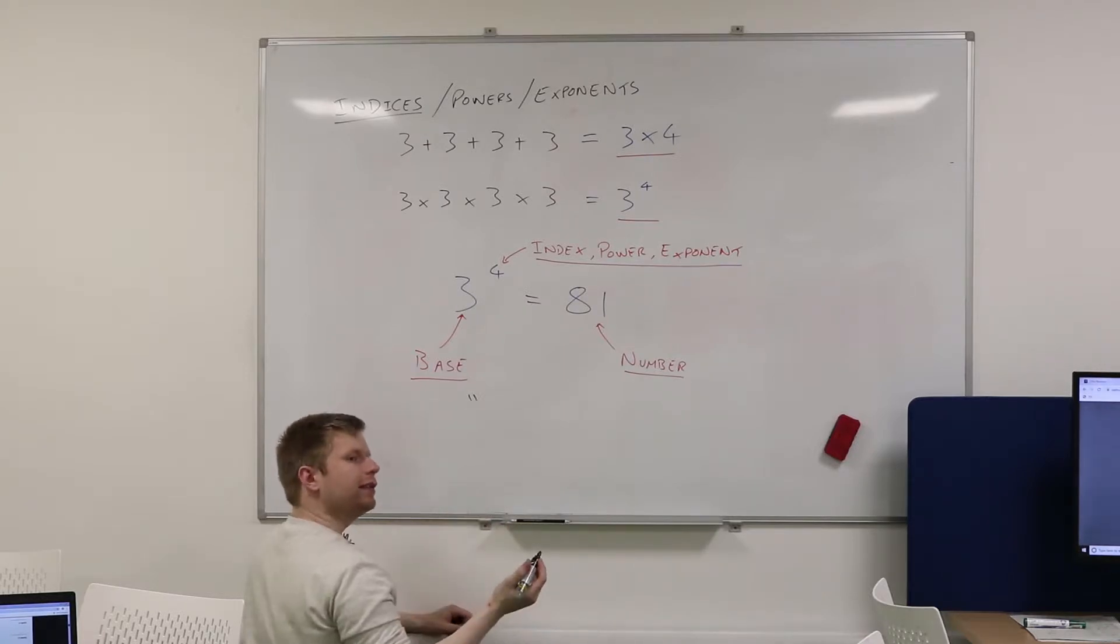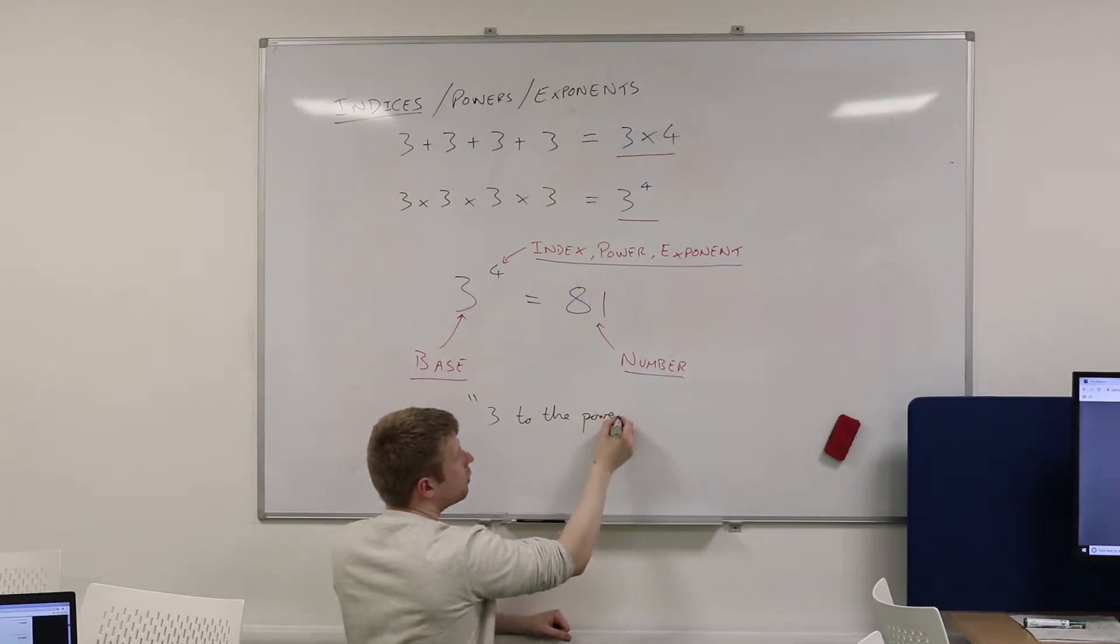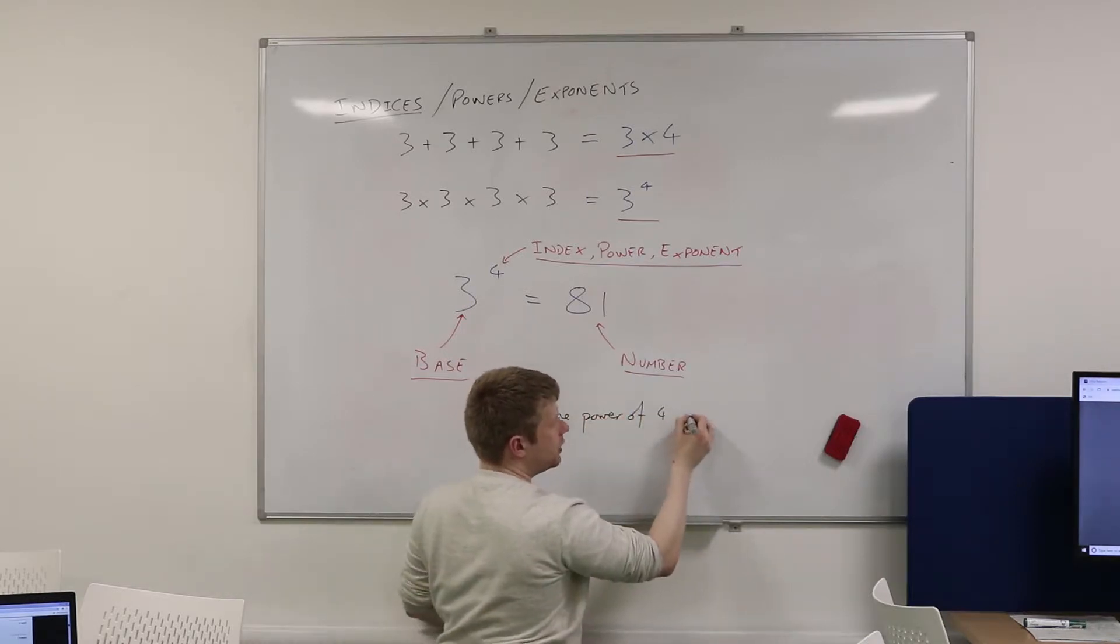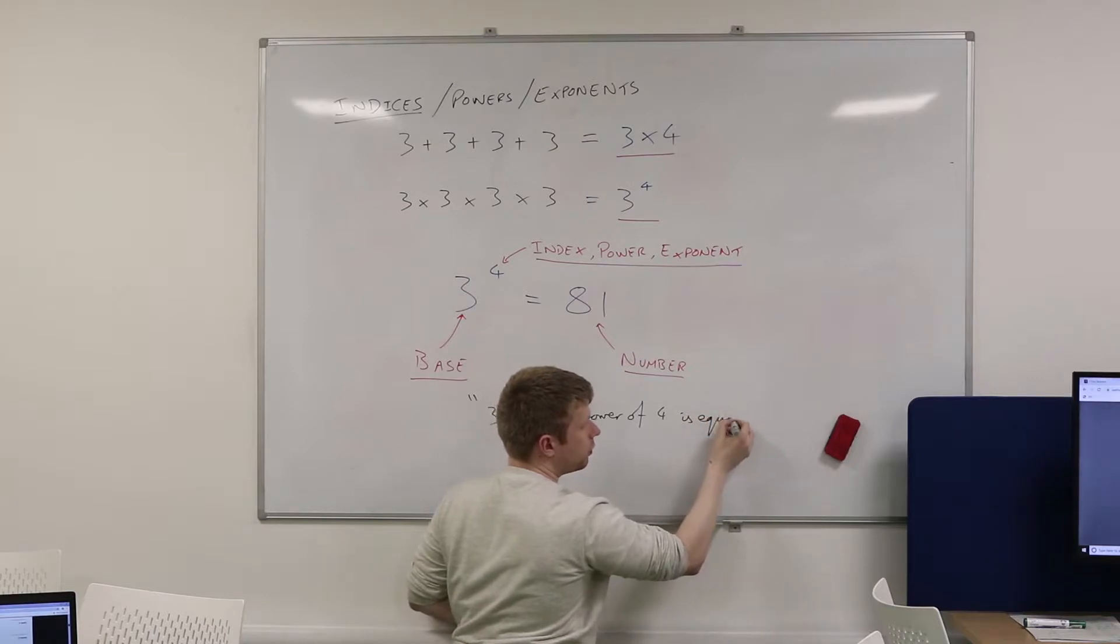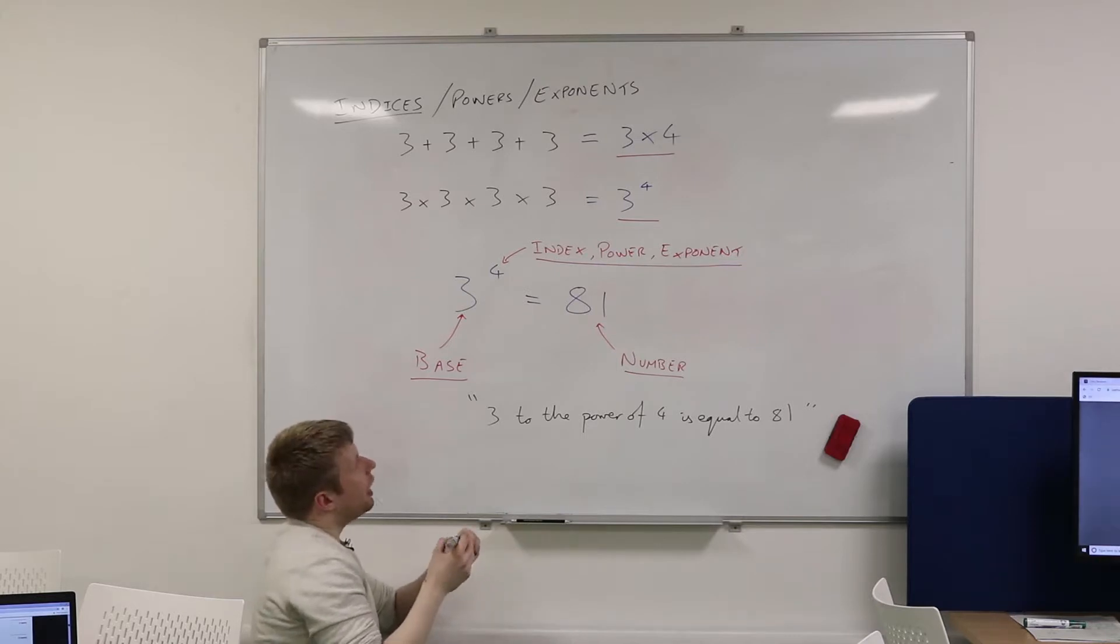I would say this as 3 to the power of 4 is equal to. Is that okay?